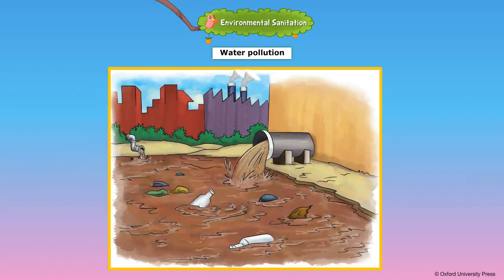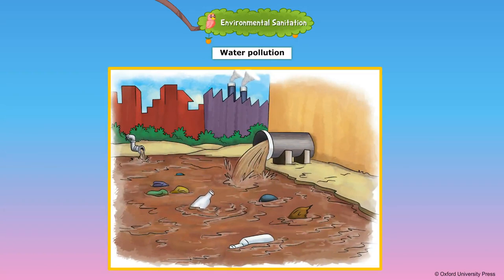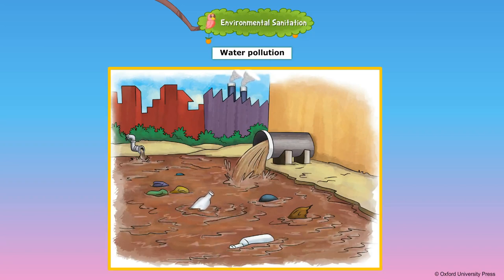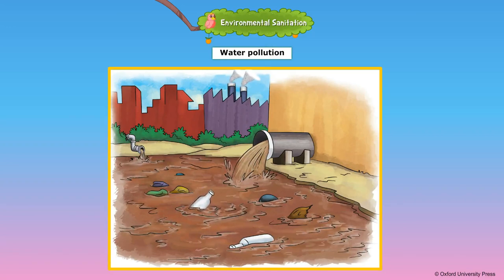In villages, rivers are used for washing clothes, bathing and for washing animals. In cities, drains from households and toxic or poisonous waste from factories empty into rivers and make them dirty. Pesticide sprayed on plants also finds its way to rivers. This leads to water pollution.